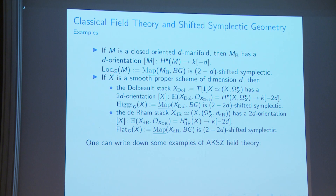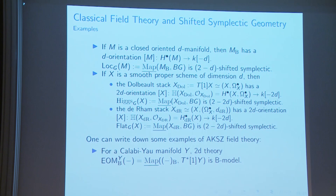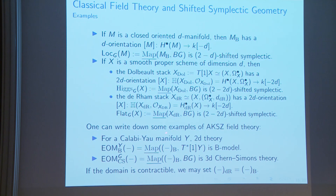Using this language, you can write down the equations of motion. For the 2D B-model with Calabi-Yau target Y, it has an AKSZ description. On a 2-manifold you get a (-1)-shifted symplectic structure as expected. For a 3D Chern-Simons theory (complex Chern-Simons), the mapping stack Map(M, BG) for a closed 3-manifold gives a (-1)-shifted symplectic structure, as expected.